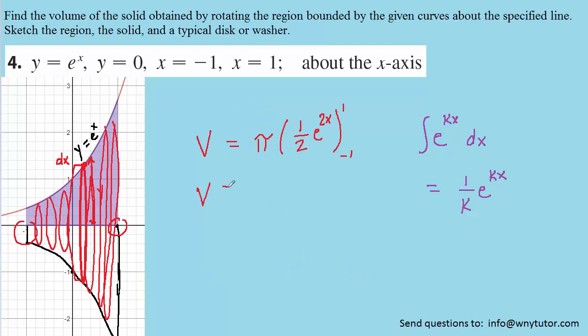We could simplify a little bit by multiplying the pi times 1 half. That's going to give us pi over 2. And then we'll plug in the upper limit of integration first. And so we're going to have e raised to the 2 multiplied by positive 1. And then we subtract. And then we plug in the lower limit. So e raised to the power of 2 multiplied by negative 1. Now, of course, 2 times 1 is 2. And 2 times negative 1 is negative 2.